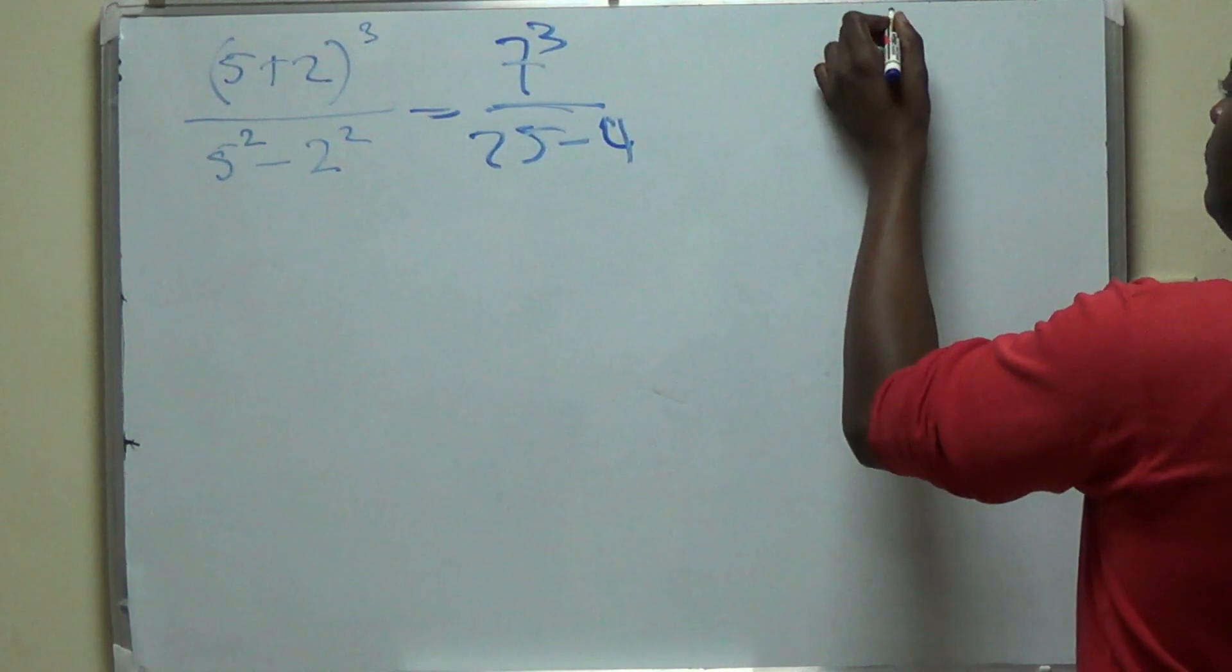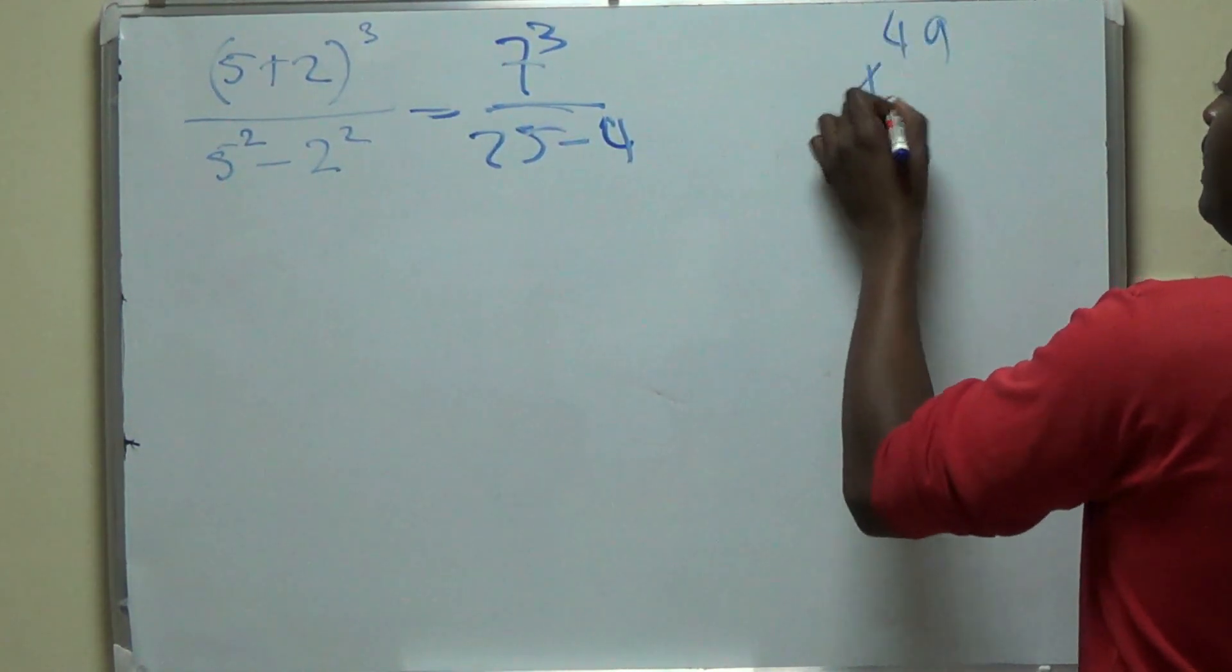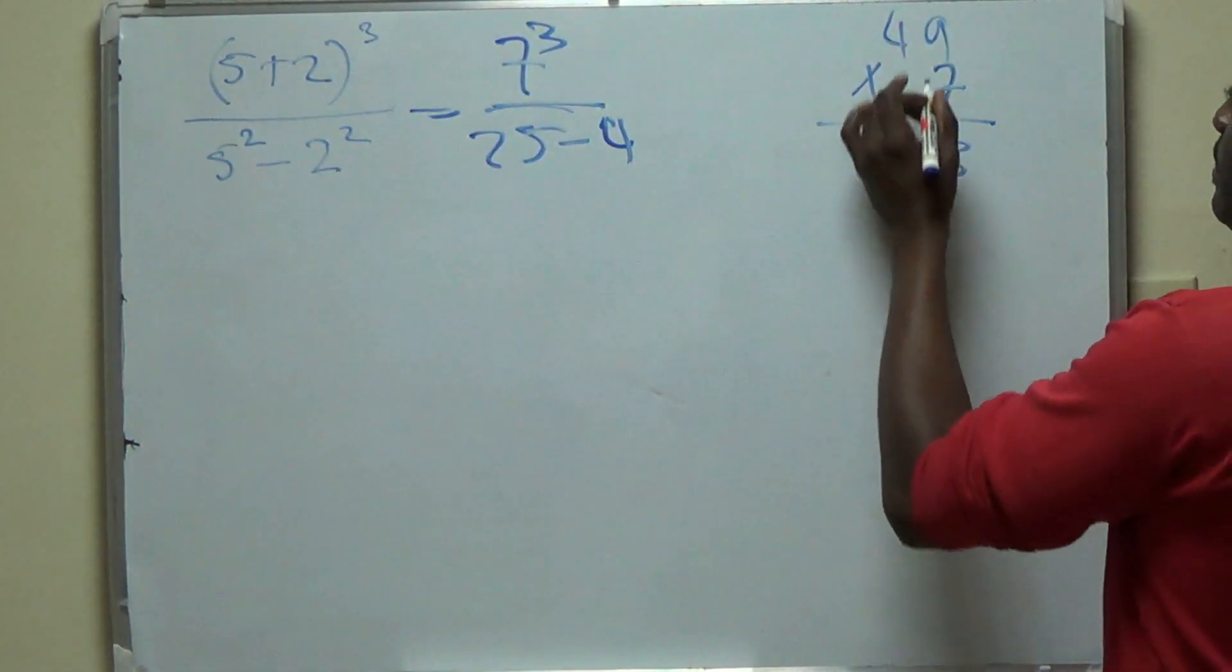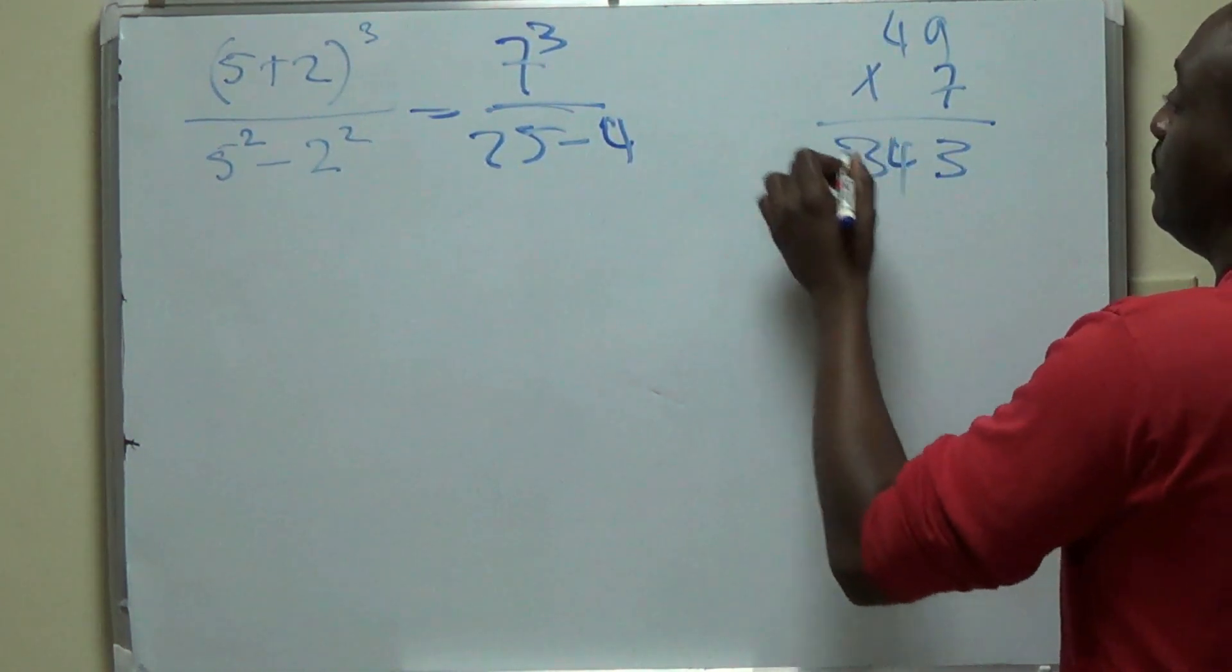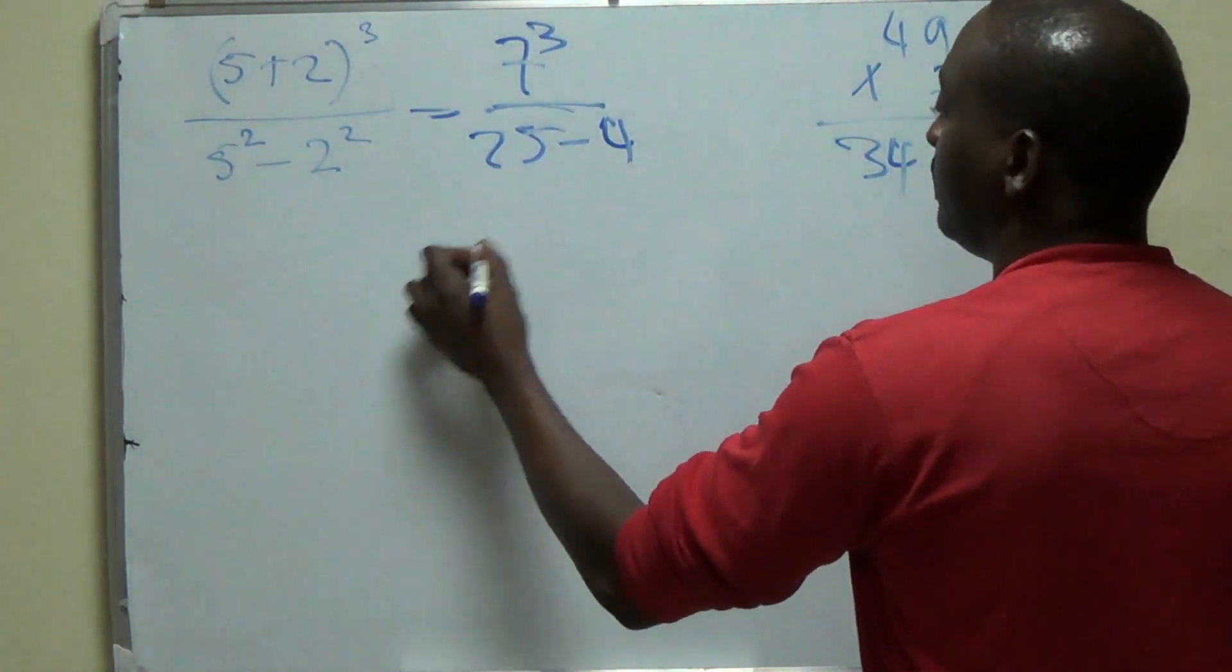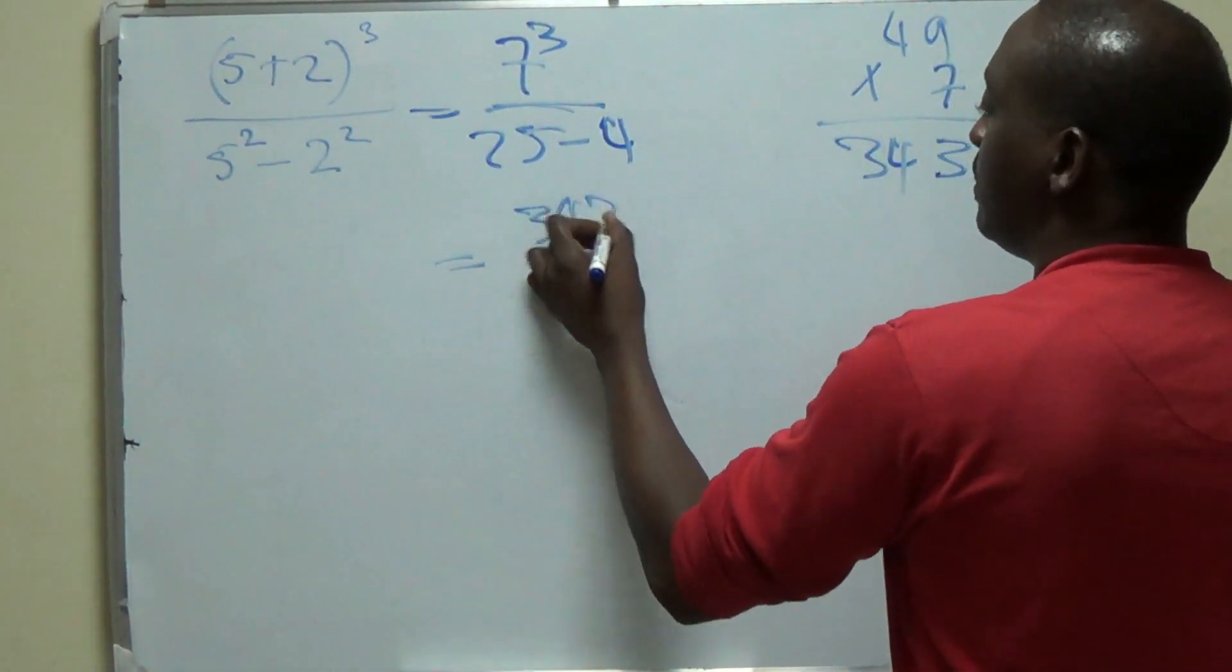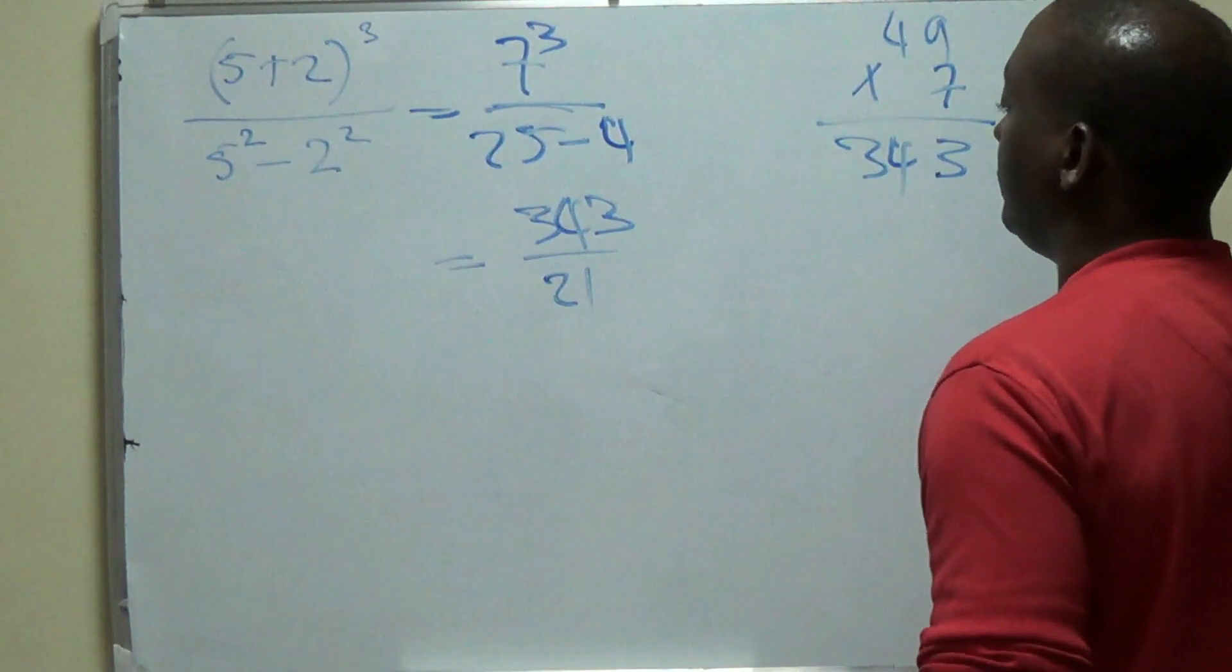49 by 7, 9 sevens are 63, 4 sevens are 28, and 6 is 34. So this would now be equal to 343, 25 minus 4 is 21.